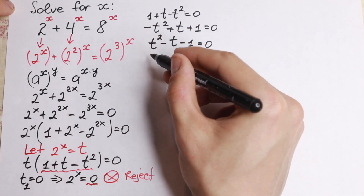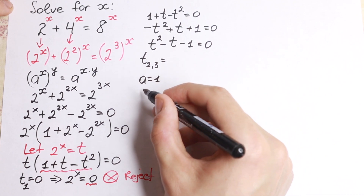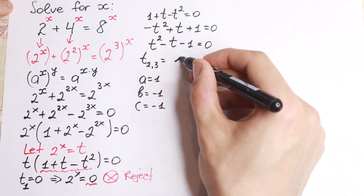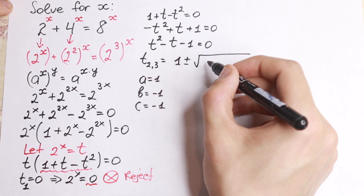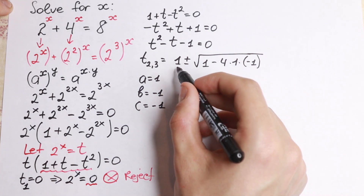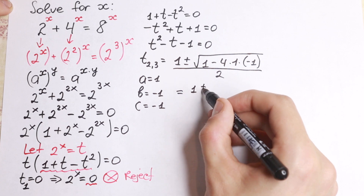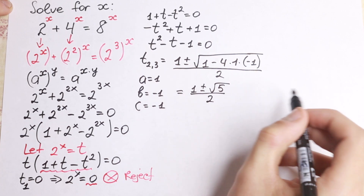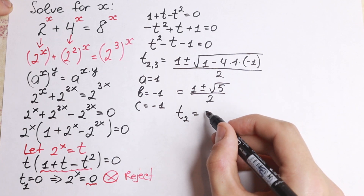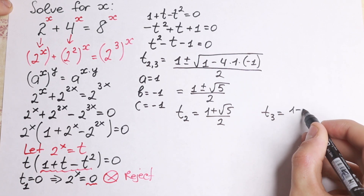Let's solve this quadratic. We have a equal to 1, b equal to minus 1, and c equal to minus 1. Applying the quadratic formula, t equals minus b plus or minus the square root of b squared minus 4ac, all over 2a. Simplifying, we get t equals 1 plus or minus the square root of 5, over 2. This gives two roots: t₂ equal to (1 plus square root of 5) over 2, and t₃ equal to (1 minus square root of 5) over 2.